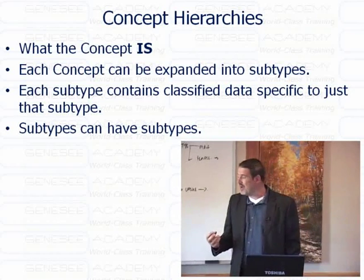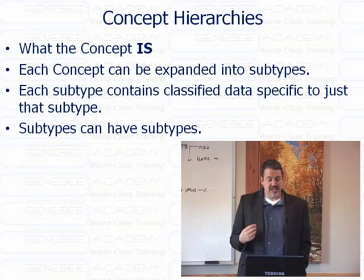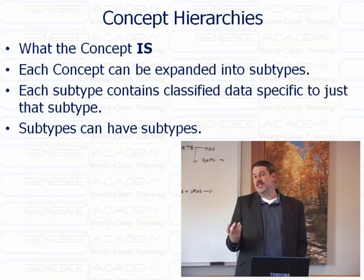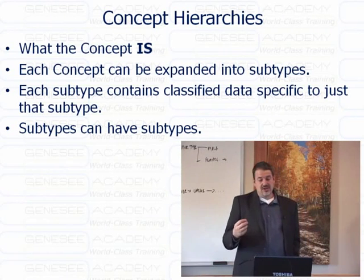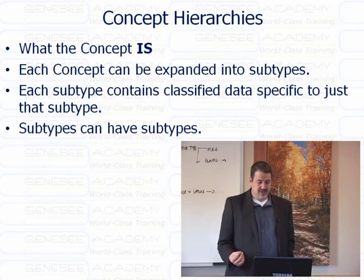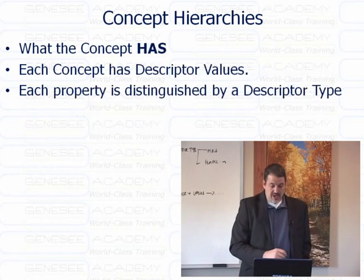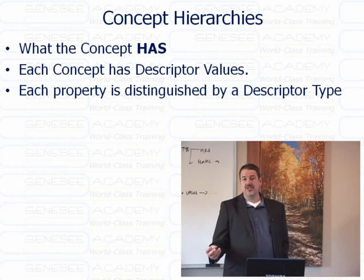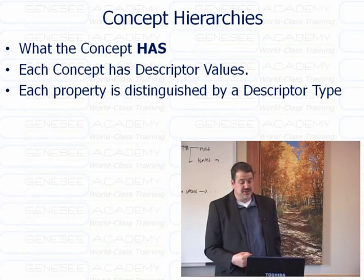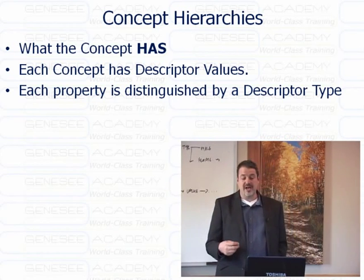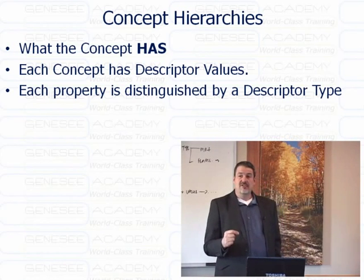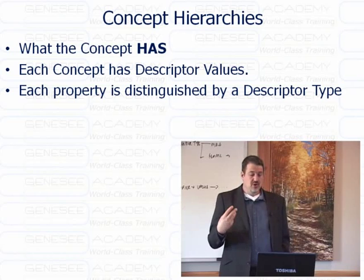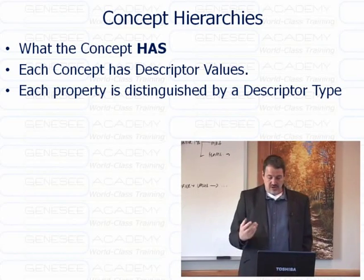The concept hierarchy tells us what the concept is — it describes the concept itself. It describes how the concept can be broken down into each of its subtypes, and it contains the classified data specific to that subtype. A subtype can also have its own subtypes. The concept hierarchy also describes what it has — those are the descriptors. A concept can have a name, a surname if it's an individual, an effective date, an end date if it's an arrangement, and so on. Each property is distinguished by a descriptor type. For example, an involved party has a name, but we can have different names — so we can type the names: first name, middle name, or last name. We can type all the objects within our concept hierarchy.